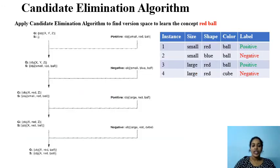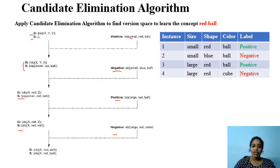The whole process is summarized here. Initially we start with G and S. On seeing positive examples, we made updates to G and S accordingly. On seeing negative examples, we made changes to keep the lists consistent. At the end, we got the final hypothesis as (x, red, ball), which clearly describes the concept 'red ball'.